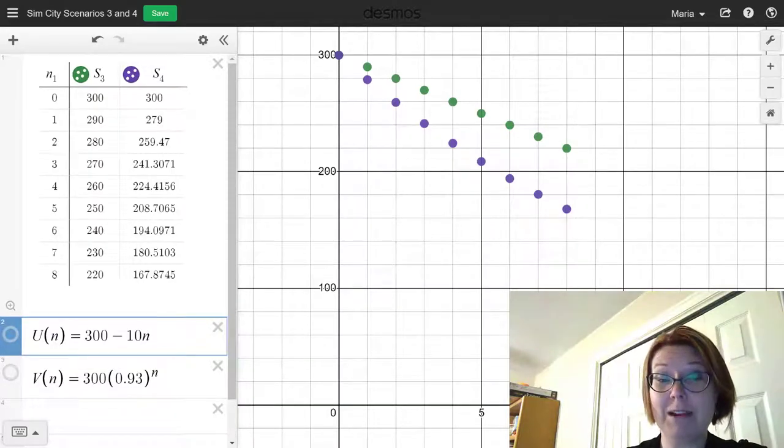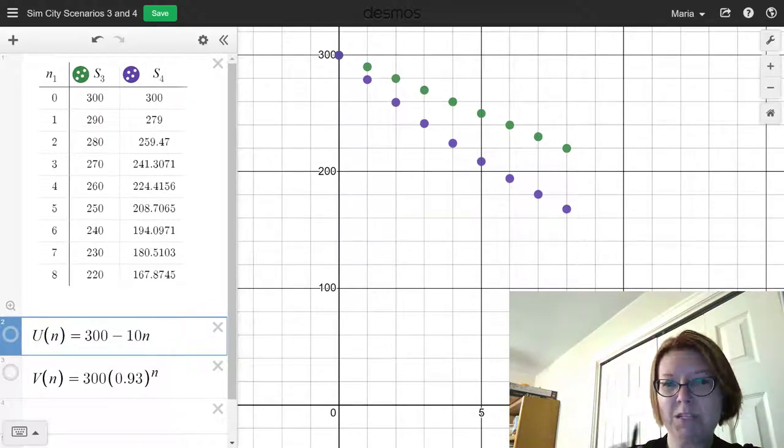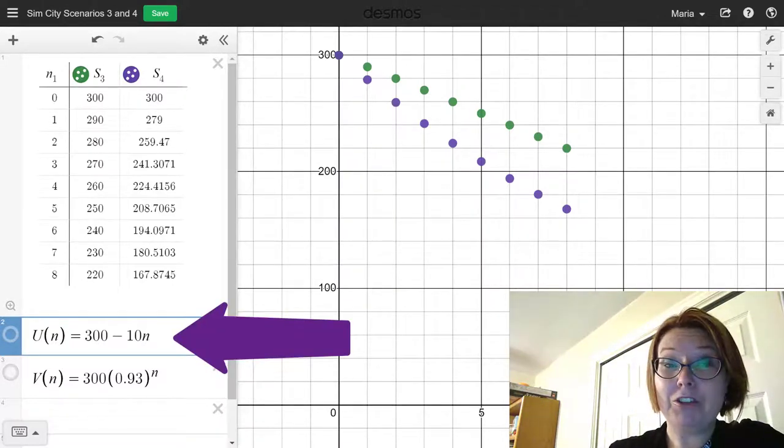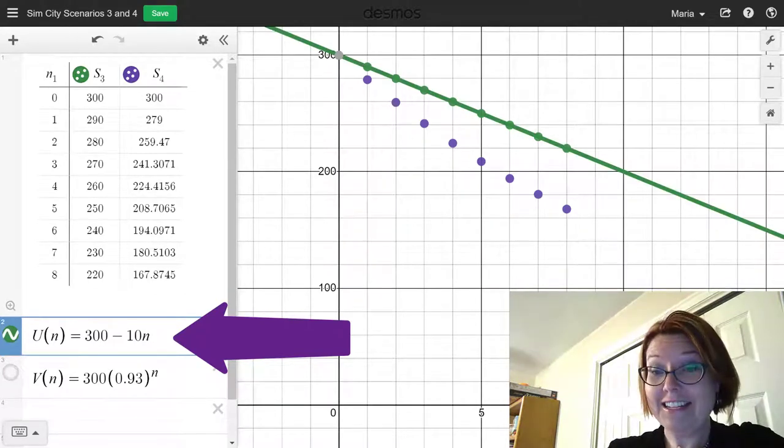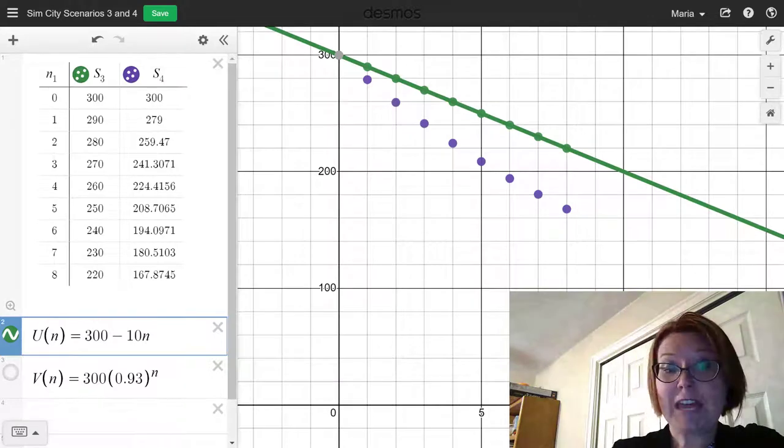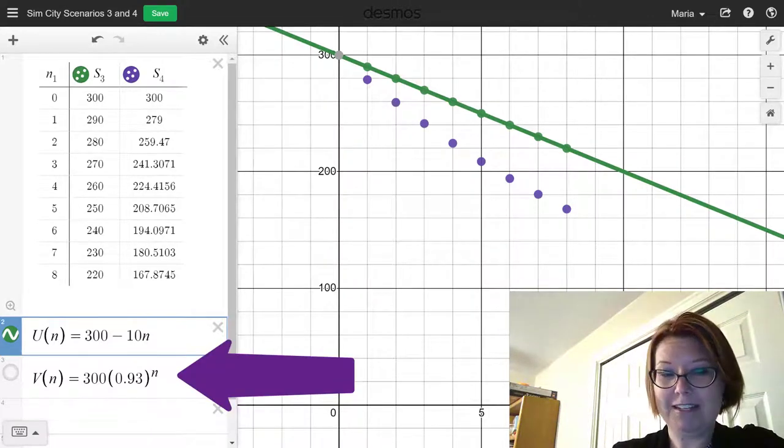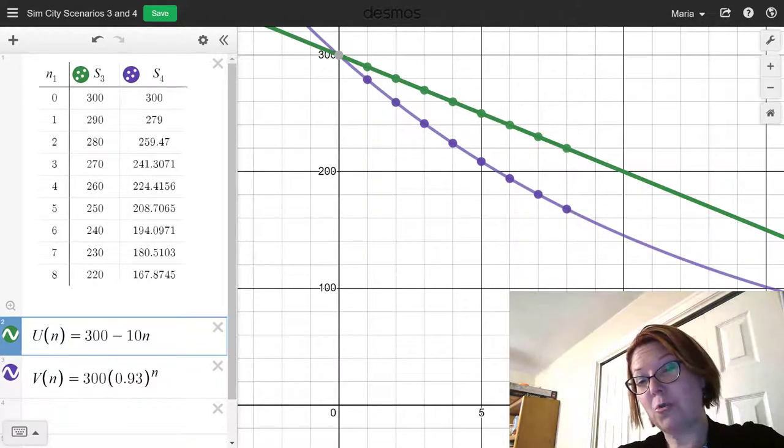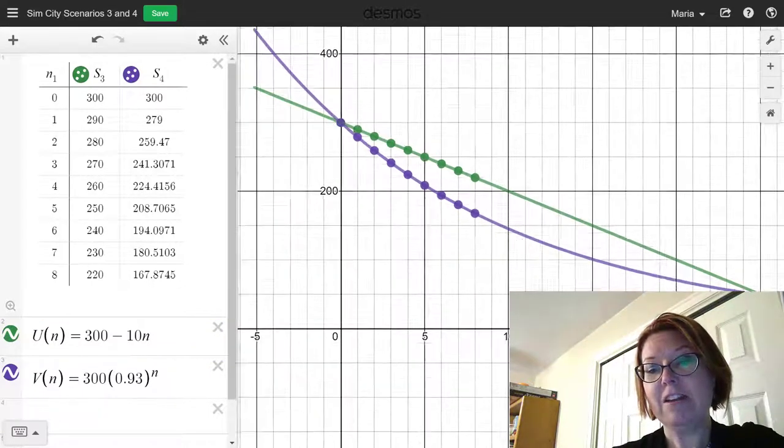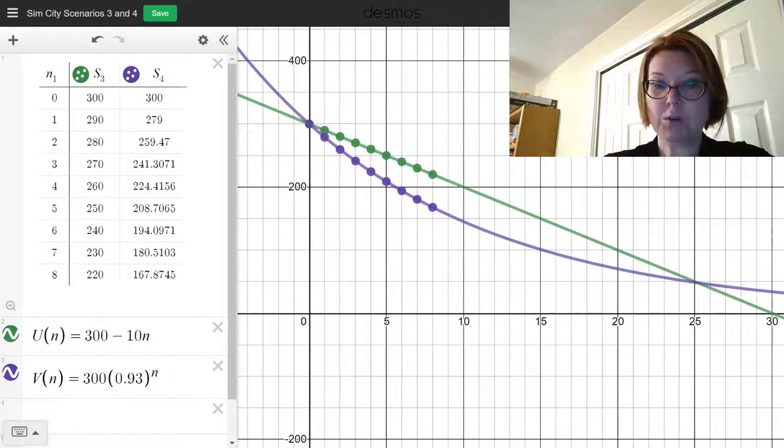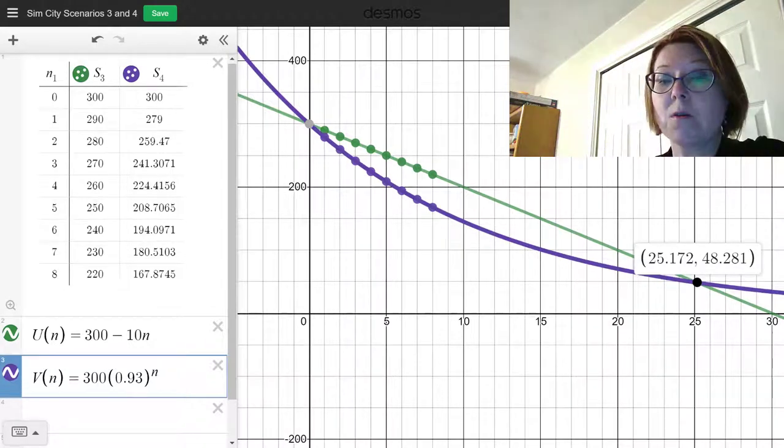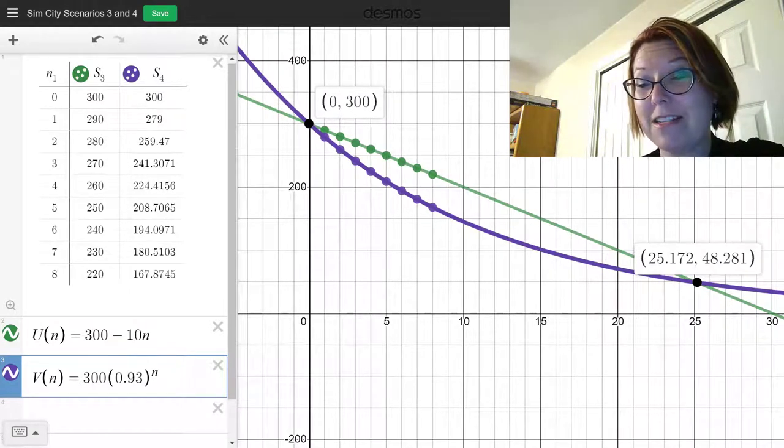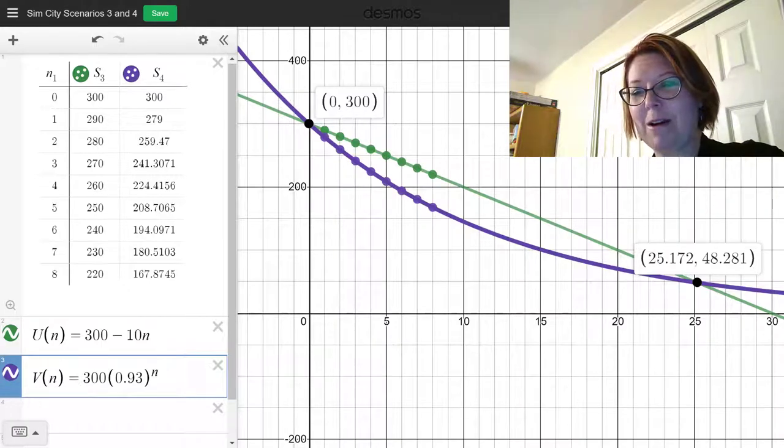Now over in Desmos, I'm going to write these formulas without those subscripts because Desmos gets a little angry when you have the subscripts both in the table and the formulas. So let's call the first one capital U of N. That's the 300 minus 10N. And if I add that to the data, we can see it's a nice straight line going down. Capital V of N is going to be 300 times 0.93 to the N. And if I add that graph, you can see that it is a curve. The part that we're seeing doesn't look too curvy, but you can see that the graph actually does curve back and eventually hits the line again at about 25, 48 roughly. So the line and the curve actually have two intersection points. The first intersection point is at 0, 300. They both started with 300 houses. And then they actually equal each other at about 25 iterations.